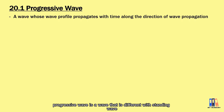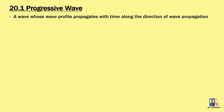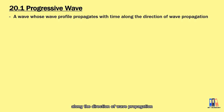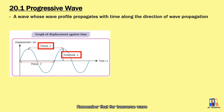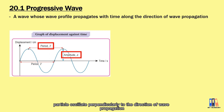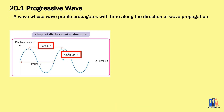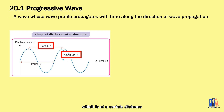Progressive wave is a wave that is different from a standing wave, which we'll learn later on. It is a wave whose wave profile propagates with time along the direction of wave propagation. In SPM, we have learned two types of graphs. One is the displacement against time, which gives you the period and the amplitude of the wave. For a transverse wave, particles oscillate perpendicularly to the direction of wave propagation. This graph shows the displacement of a particle at a certain distance from the source over a time range.